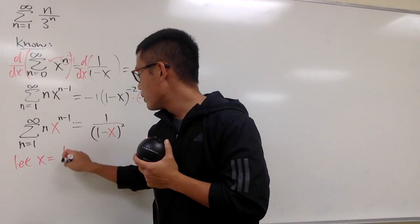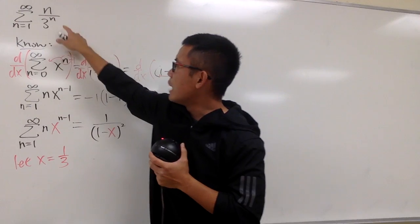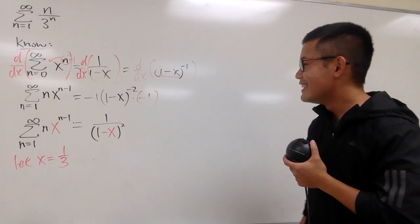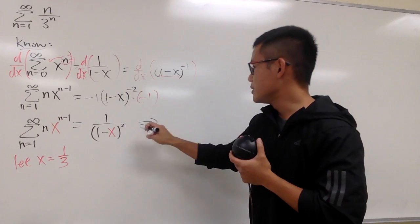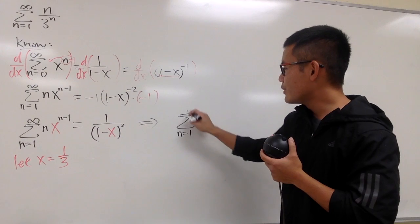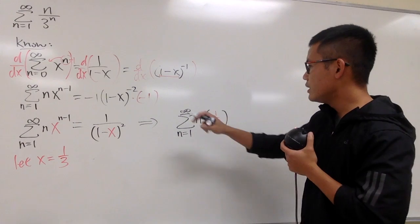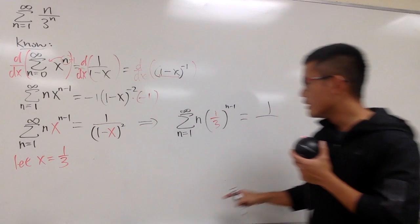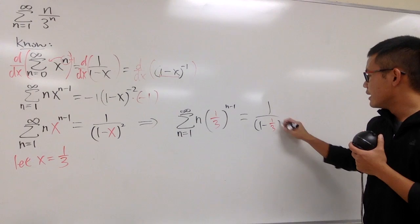Let x equal 1 third. And the reason is because so that I can bring this down to the denominator, and I will have some kind of 1 over 3 to the n's power. So let's see what we end up with. This is going to give us the sum, the series, n goes from 1 to infinity, n, and then 1 third to the n minus 1 power, and then we also have to plug in 1 third onto the right-hand side, so 1 minus 1 third squared.